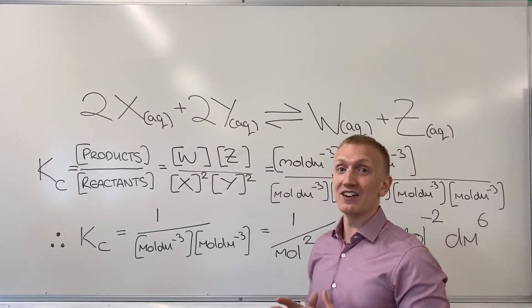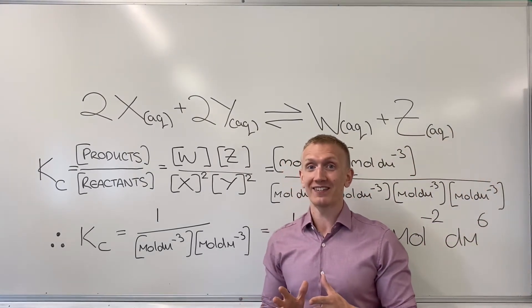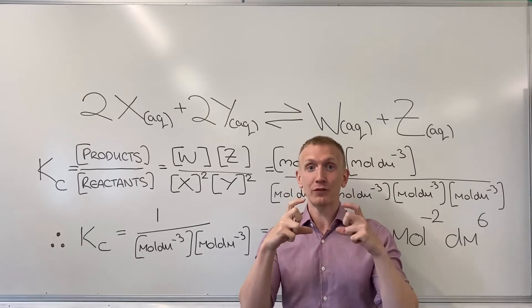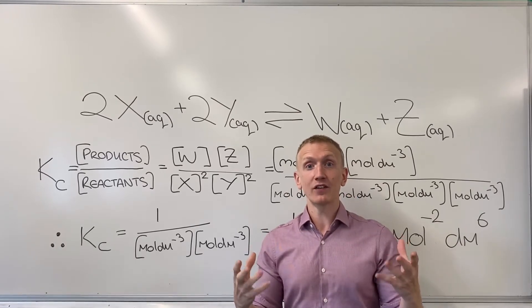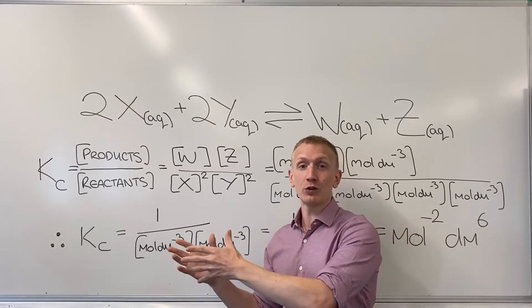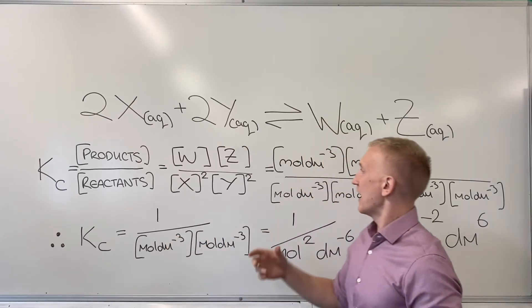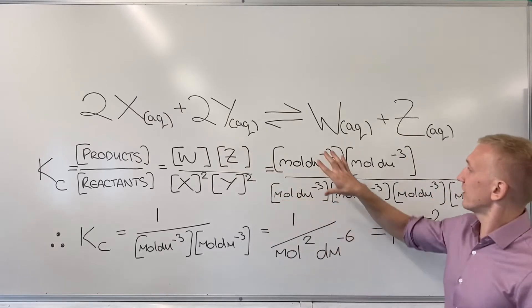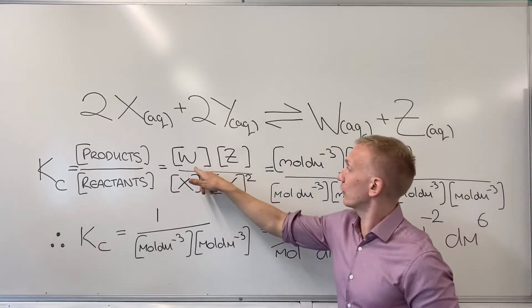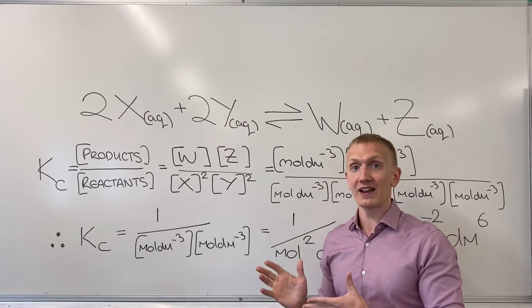Finding the units then just takes a little bit of practice. Every time you have a set of square brackets you have the units of moles per decimetre cubed, because a square bracket represents concentration. And so here across the top you can see I've got moles per decimetre cubed twice because I've got two concentration terms on my numerator.